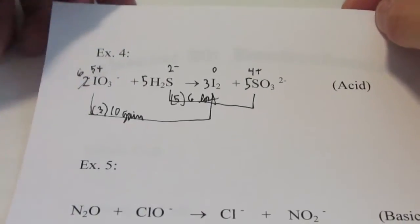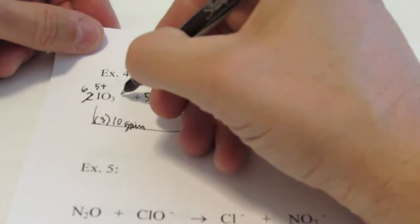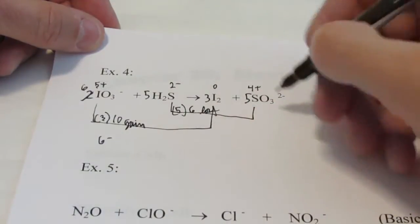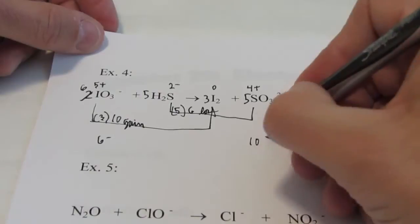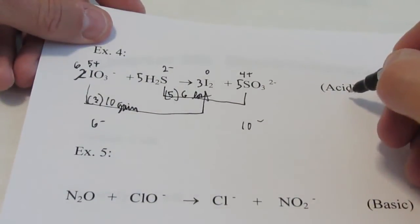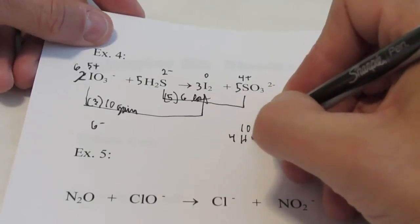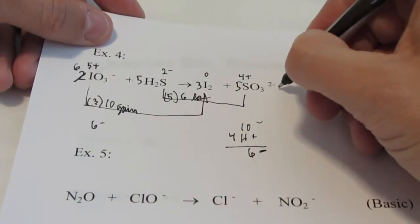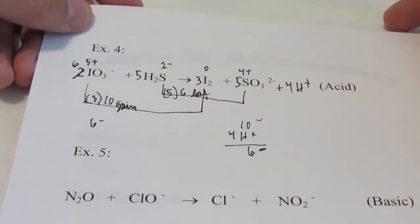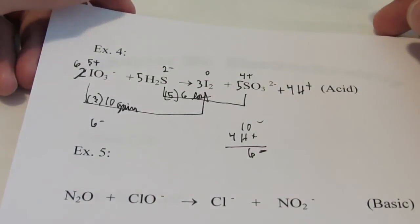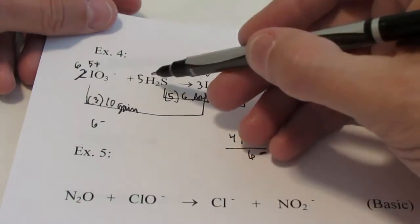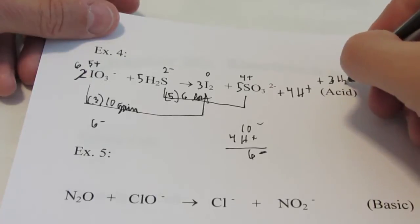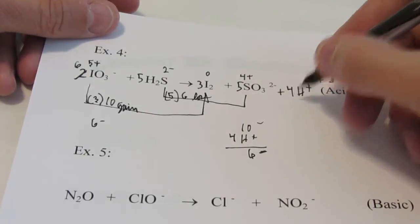Step three: let's balance the ionic charge. We have six iodate ions each at one negative — six negatives. H₂S is not charged, I₂ is not charged. We have five SO₃²⁻ giving ten negatives on the product side. This is an acidic solution, so we're going to add four H⁺ to the reactant side — that will give me six negatives on both sides. Let's write in plus four H⁺. Final step: balance all hydrogens with water. Ten hydrogens here, only four over here, so I add three H₂Os to give six more hydrogens — ten on both sides.